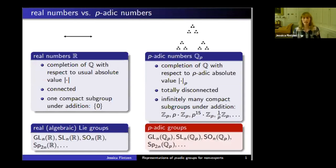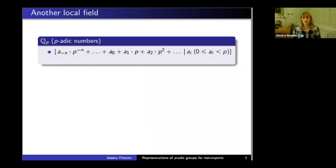What are p-adic groups? These are the same, except you substitute the real numbers by the p-adic numbers. You take GL_n with entries in the p-adic field, or SL_n, SO_n, SP_2n, or your favorite Lie group now over the p-adic numbers.